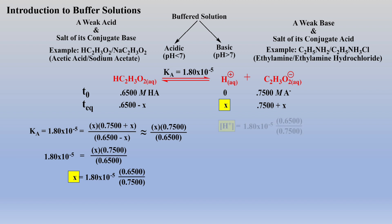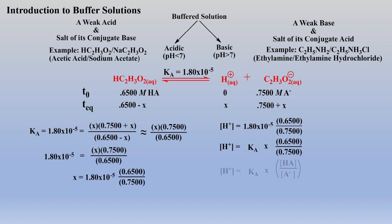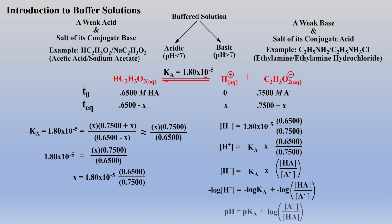Followed by another substitution for the Ka value. In addition, let's substitute the conjugate base and weak acid concentrations into our expression. At this point, if we take the log of both sides of the equation, followed by some simplification, we get the very useful Henderson-Hasselbalch equation.